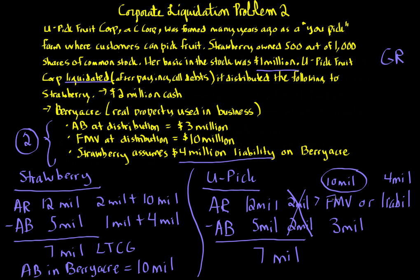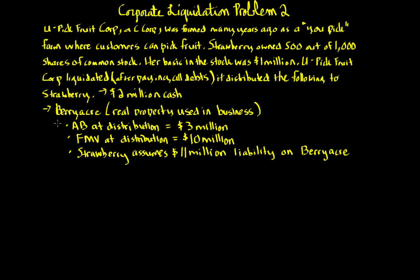That is variation two. Finally, variation three — our last variation. All that changes is the information regarding Berry Acre. We have complete liquidation under section 346. We ask: general rule or special subsidiary liquidation rule under 332 and 337? Because Strawberry owns 50%, nobody owns 80% or more, so the general rule applies — section 331 and 336.